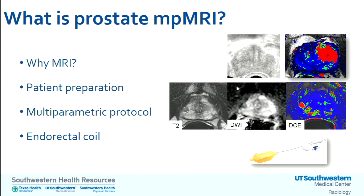We frequently refer to this as a multiparametric MRI of the prostate. This means we use different parameters and pulse sequences combined to come up with an assessment of our perceived likelihood of a focal lesion being a clinically significant cancer. We use the endorectal coil as our standard protocol, which has been shown to improve image quality and our ability to differentiate normal tissues from prostate cancer.